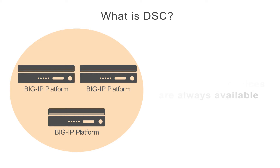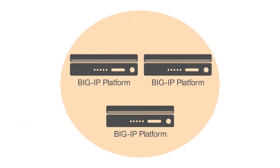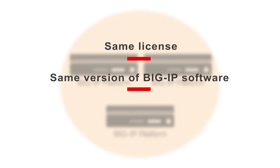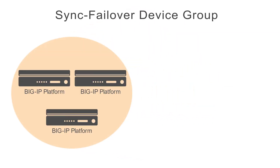When you put two or more BigIP devices in a cluster or device group, they can reliably work together to process requests and responses from multiple applications. In the simplest configuration, all devices in the group are identical hardware or virtual platforms, although this is not a requirement. The only requirements for devices to be eligible for inclusion in the same device group are that they are licensed identically, running the same version of BigIP software, and have the same BigIP modules provisioned. The most common type of device group is a sync failover device group.